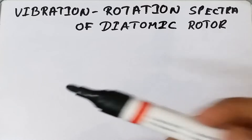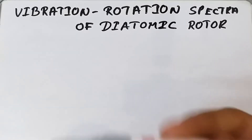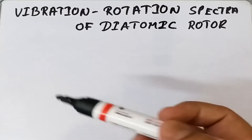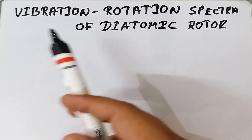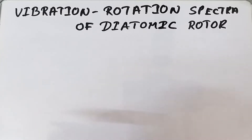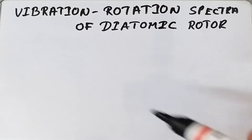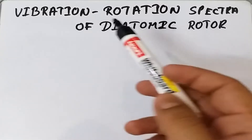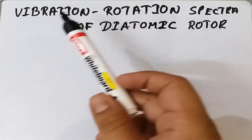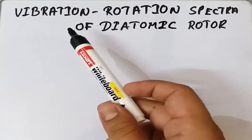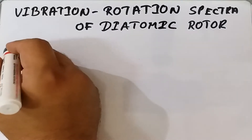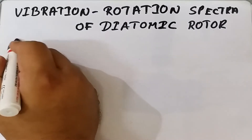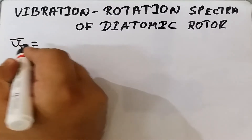Both these transitions are independent of each other. We have already studied independently the energies for rotational spectra as well as energies for vibrational spectra. The total energy resulting from the combined motion — rotational as well as vibrational — will be the sum of both these energies.